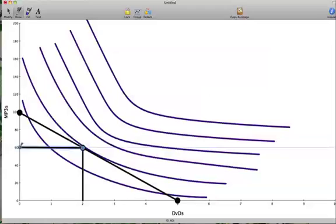But what happens when the price of DVDs falls to $13? The indifference curves do not change because they represent our preferences. What changes is the budget line. So we need to first construct a new budget line.